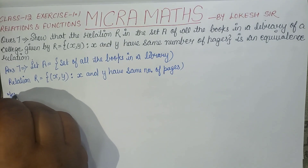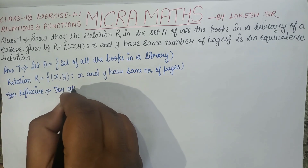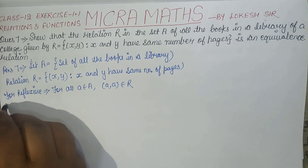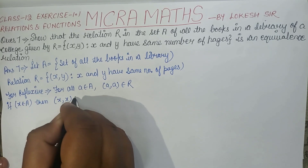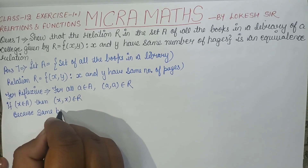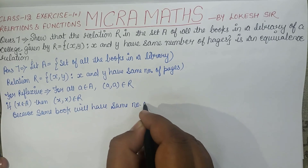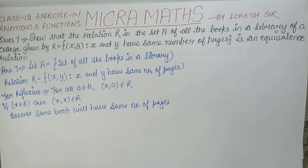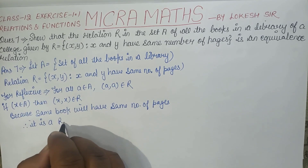For reflexive: for all A that belongs to A, (A, A) should belong to R. If X belongs to A, then (X, X) belongs to R, because the same book will have the same number of pages. If any book X has 12 pages, then it will have 12 pages — same number of pages. Therefore, it is a reflexive relation.